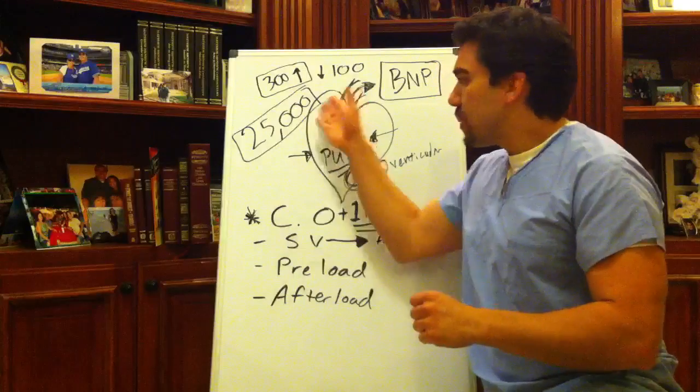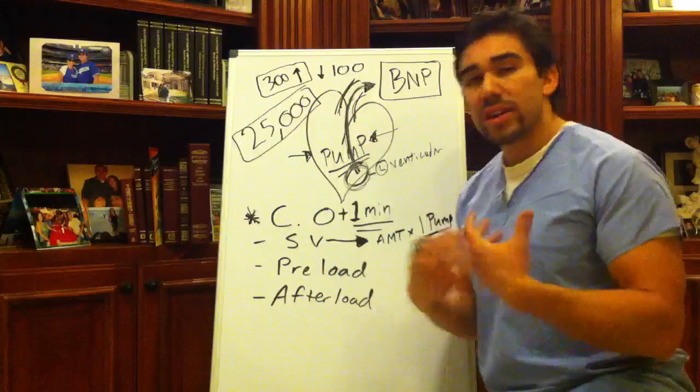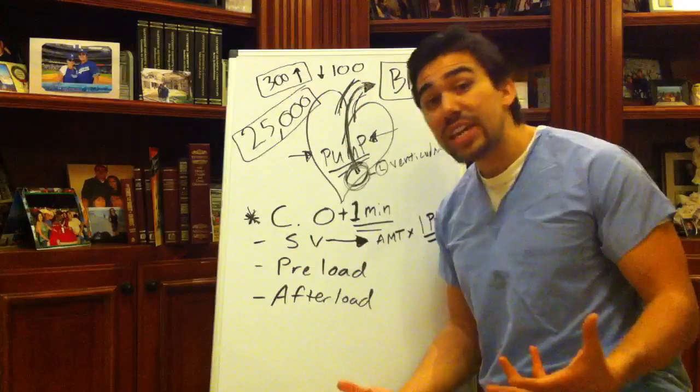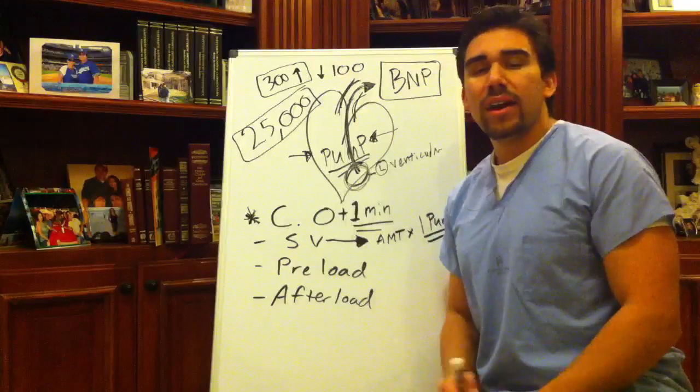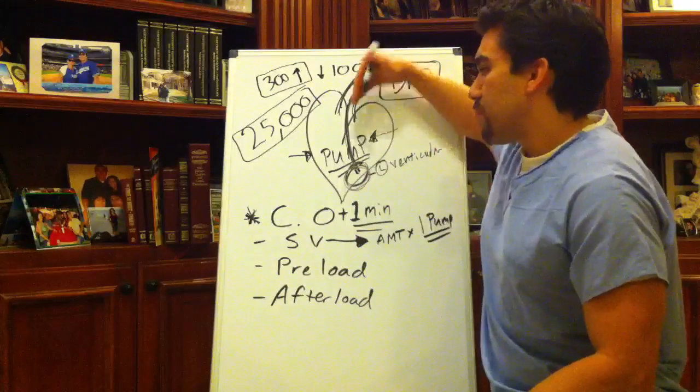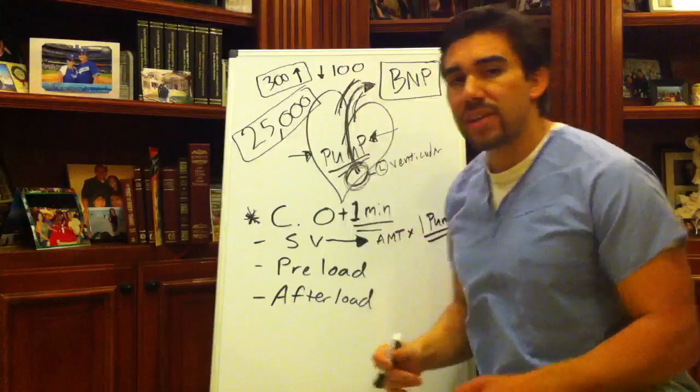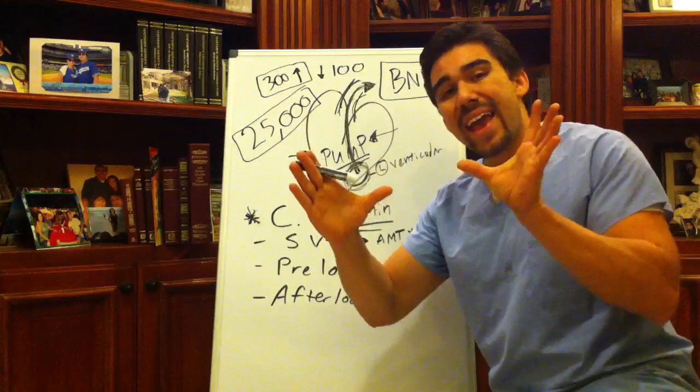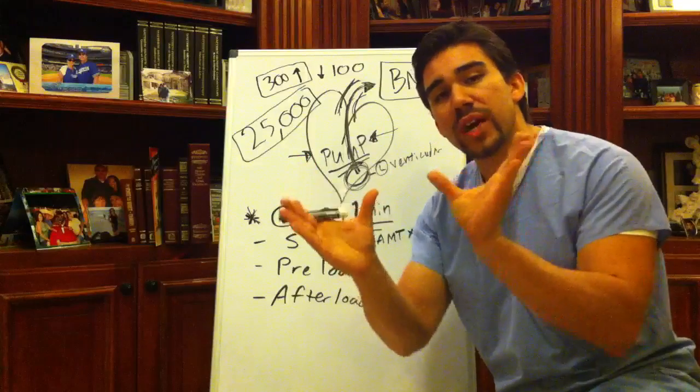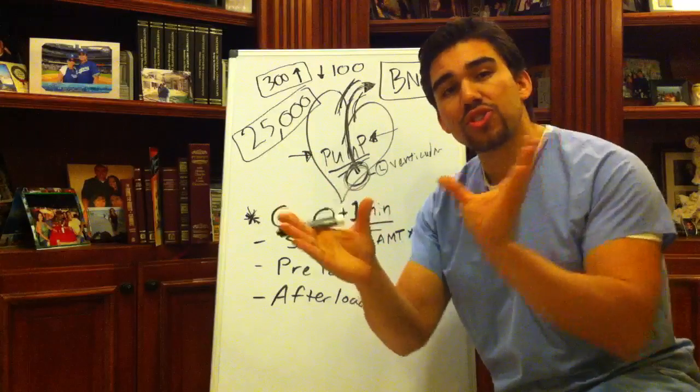So, in patients with CHF, or congestive heart failure, or hypertension, or cardiomyopathy, you have a backup of pressure into that left ventricle causing a bigger stretch, a bigger preload. And the afterload is really trying its hardest to squeeze.